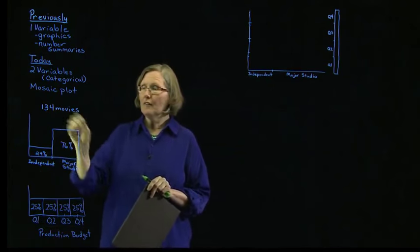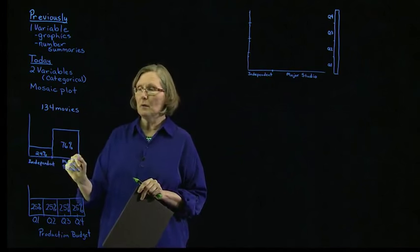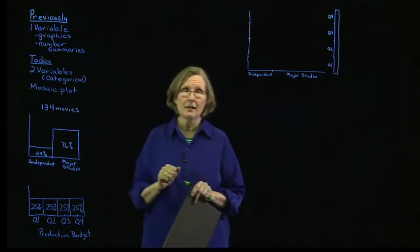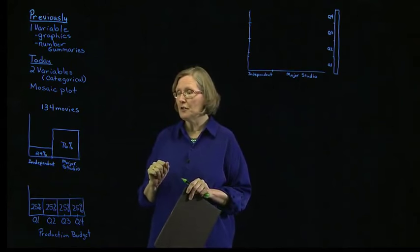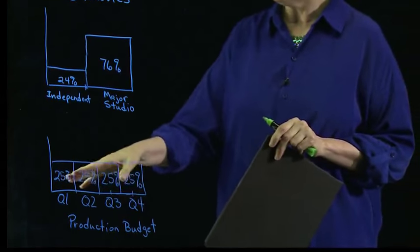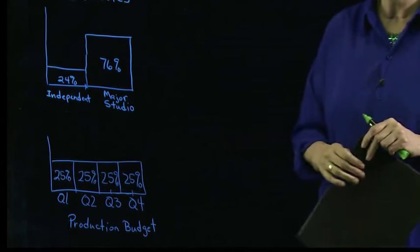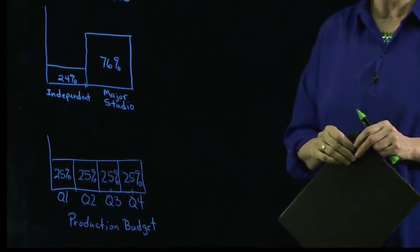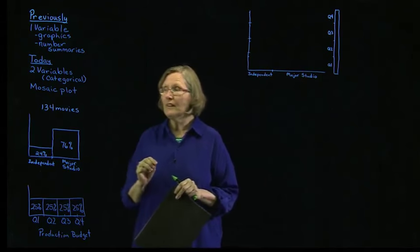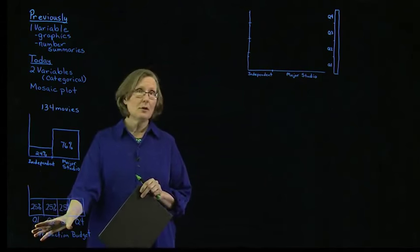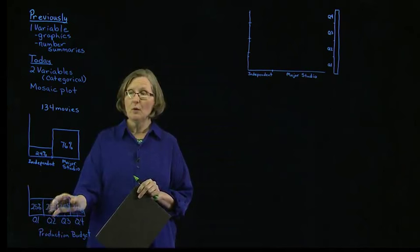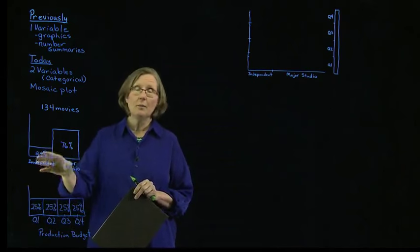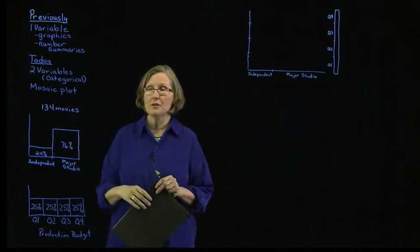Of our 134 movies, 24% were independent and 76% were made by a major studio. The quartiles are split so that 25% of the movies fall into each quartile. The question of interest is: is the distribution of production budget into the quartiles the same for independent movies versus major studios?